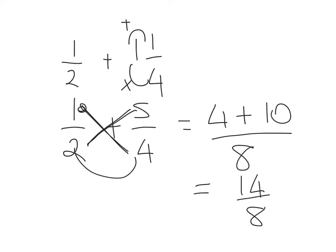Always check and make sure that you simplify. I can divide top and bottom by 2, and the final answer will be 7 over 2.